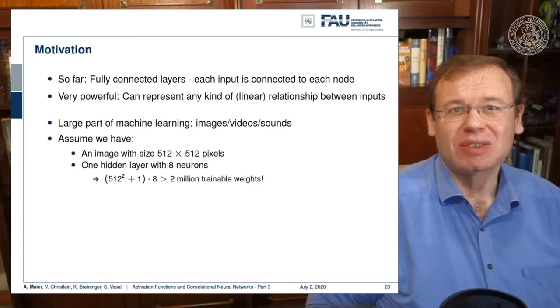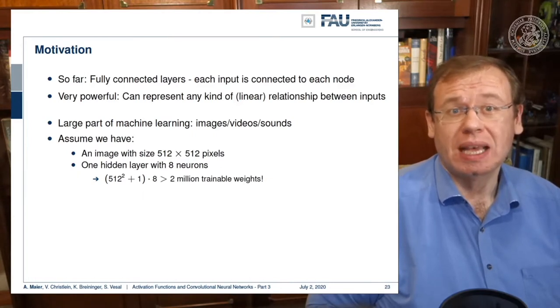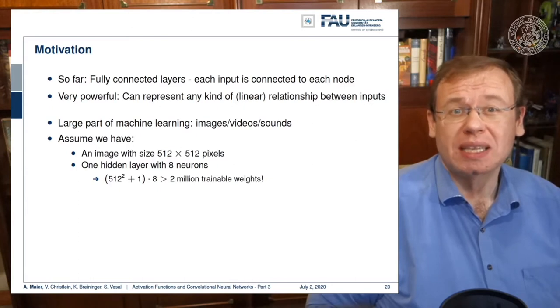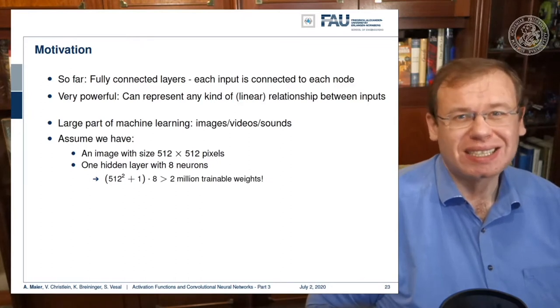That means that one hidden layer with eight neurons has already 512 to the power of 2 plus 1 for the bias times 8 trainable weights. That's more than 2 million trainable weights just for a single hidden layer.